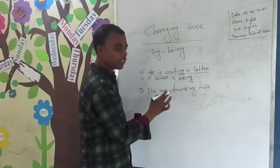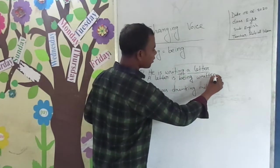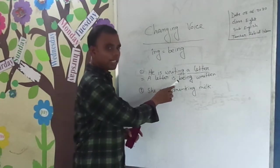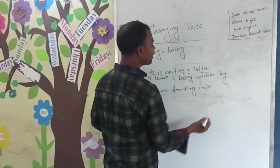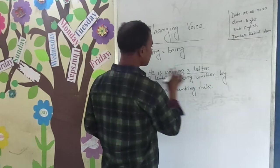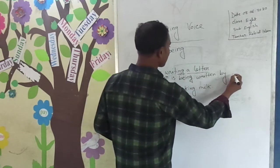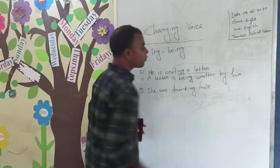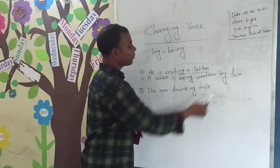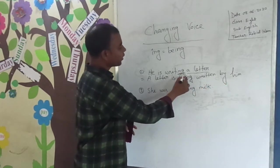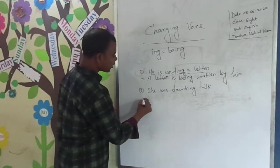Then part three — as you are writing, part three is 'written.' So 'a letter is being written.' Then, according to the structure, you add 'by,' then the subject with its objective form — 'him.' So the whole sentence is: 'A letter is being written by him.' And 'is being' is the turning point of these types of voice.